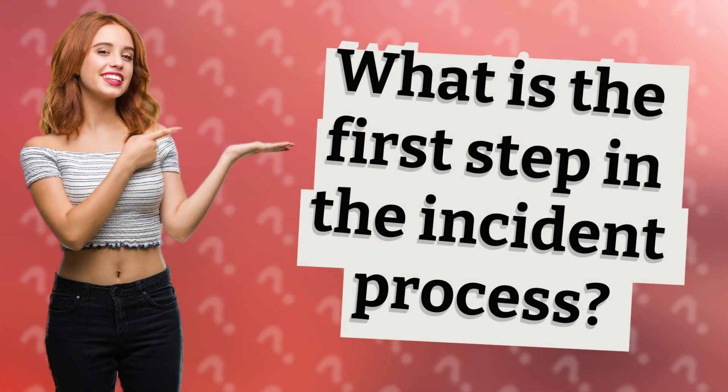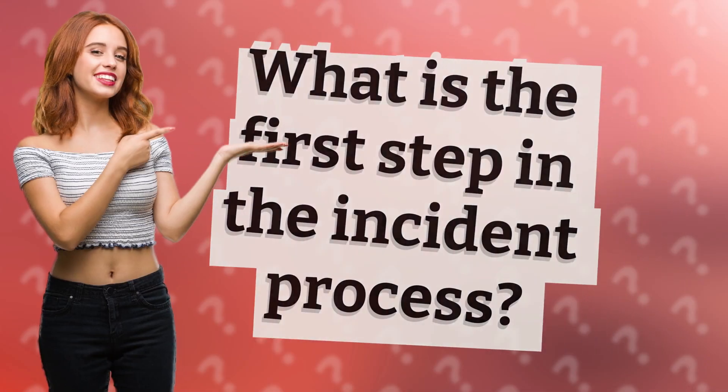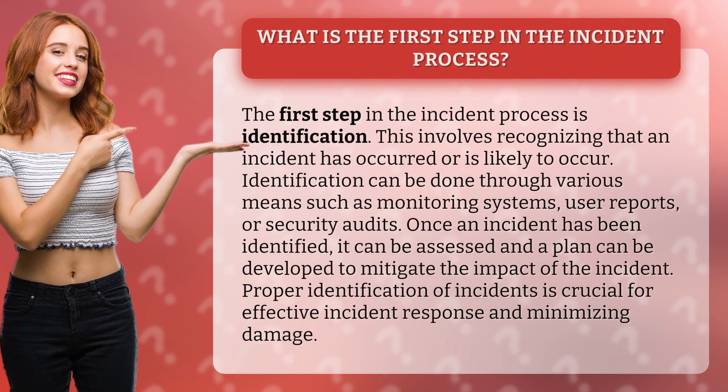What is the first step in the incident process? The first step in the incident process is identification. This involves recognizing that an incident has occurred or is likely to occur. Identification can be done through various means such as monitoring systems, user reports, or security audits.